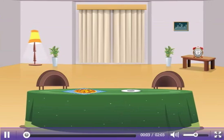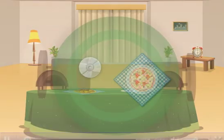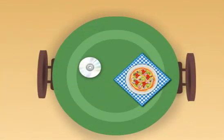If you look around, you can see many things which have the shape of a circle — a tabletop, a CD, a pizza, and so on.